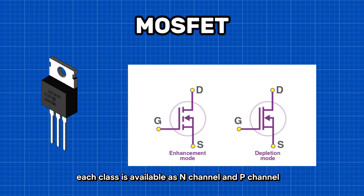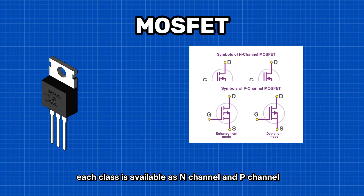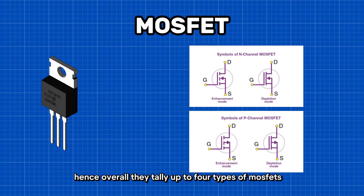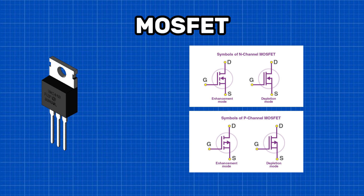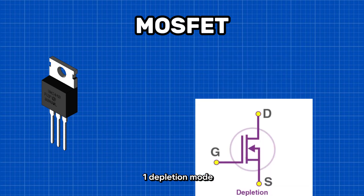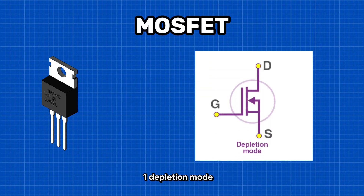Each class is available as N-channel and P-channel, so overall they tally up to four types of MOSFETs. Let's talk about the two ways they function. One: depletion mode.